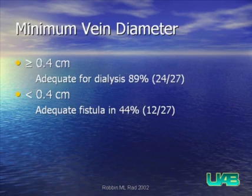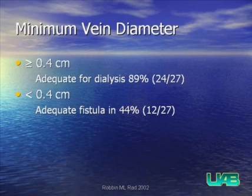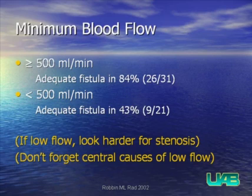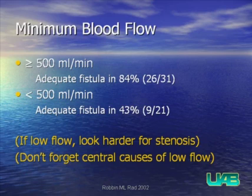Post-operative sonographic maturity criteria include minimum vein diameter. Size is not enough, but it is still important. If the draining vein is greater than 4 millimeters diameter, patients were adequate for dialysis in 89% of cases; when less than 4 millimeters, only 44% were sonographically or clinically mature. We also look at volume blood flow: if greater than 500 milliliters per minute, fistulas were adequate in 84%, whereas if less than 500, less than half were clinically adequate.